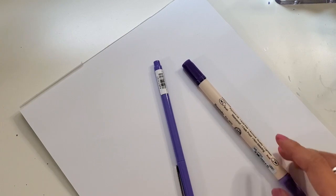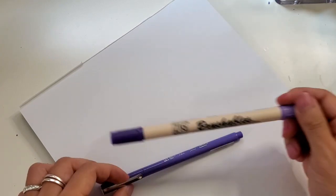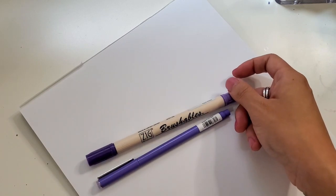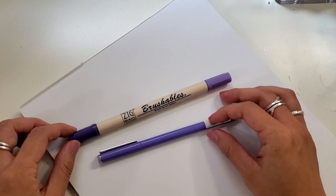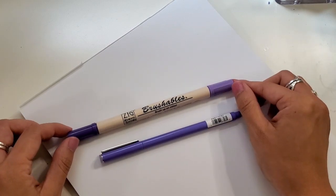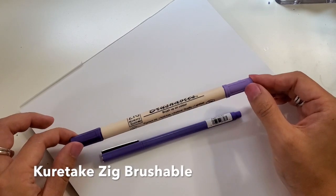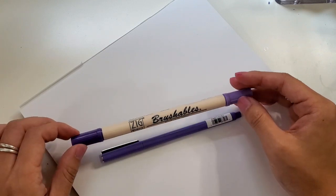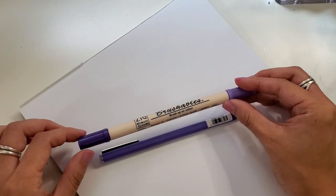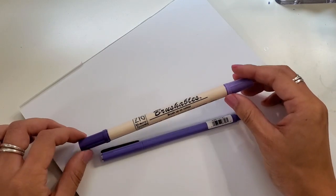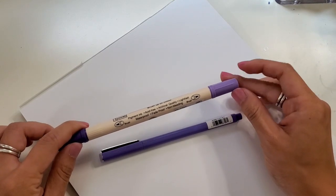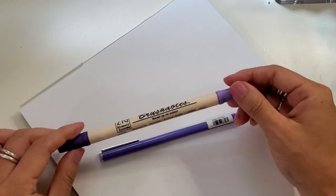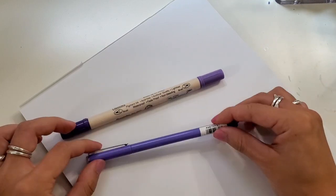I'll be modeling them with two different brush markers. This one is the Zig Brushable. I love these for beginners and they have a very different kind of ink than Tombow's and other water-based inks. It's a pigment ink which means it's going to be lightfast, waterproof, fade-proof. They don't bleed and they're about the same price.